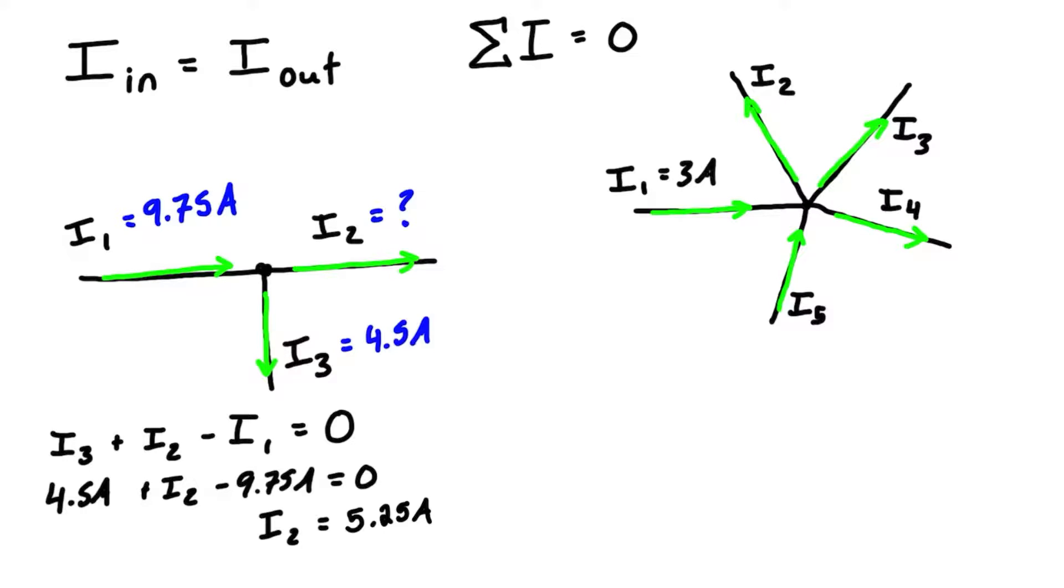Let's say that i1 is 3 amps, i3 is 11 amps, i5 is 4 amps, and i4 and i2 are unknown. But we'll say that i2 is equal to 3 times i4.